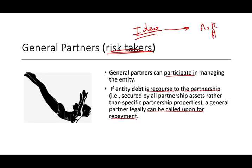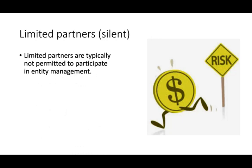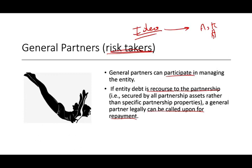If you have the money, you want to be a limited partner — sometimes called a silent partner. Limited partners cannot participate in the entity's management; they are considered silent. As a general partner, if you come to someone with an idea and they think it's good, they might say: I'll give you the money, but I want to be a limited partner. They are only liable for the partnership debt to the extent of any unpaid contribution they contractually agreed to make. Once they satisfy that obligation, that's all they owe.